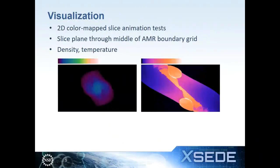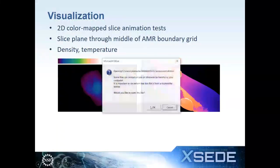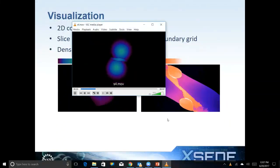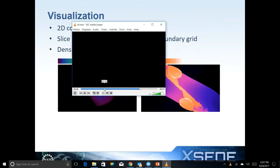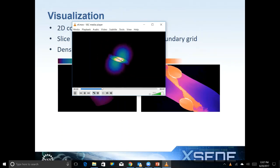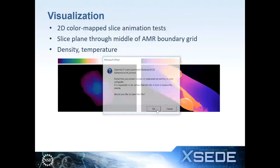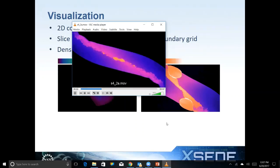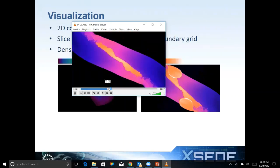The first thing I like to do with a large dataset is take a couple of slice planes right through the middle, just to make sure I'm seeing something similar to what he saw in VisIt. Showing density with its corresponding color map on the left and temperature on the right, this verifies I'm reading the data correctly. Right away we start to see some really interesting structure in the middle with both density and temperature.